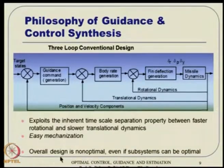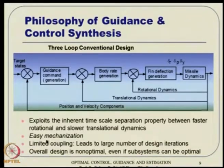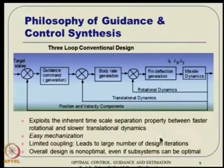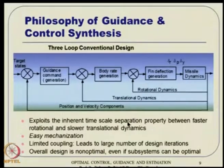But the drawback is the overall design is non-optimal, even if each subsystem is individually optimal. Also, because of limited coupling — point mass here, six-DoF there — it typically leads to a large number of design iterations. The good part is it exploits time scale separation and gives certain advantages, including easy mechanization, but these drawbacks exist.